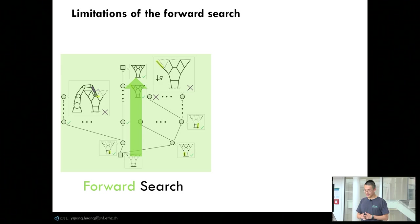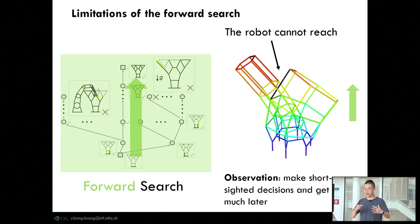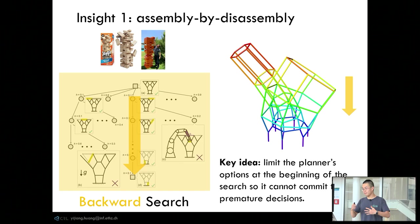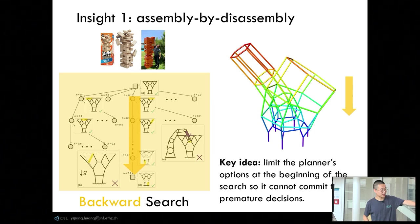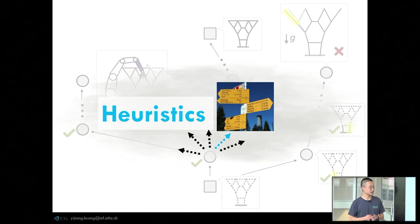A standard forward search can easily get stuck because of collision. The search starts from the ground, makes greedy decisions among too many seemingly innocent options, and only at the very end realizes it's stuck because one element can no longer be reached. One key algorithmic insight is that instead of going forward, we should search backwards — starting from the completed state and removing elements, like playing Jenga in reverse. By doing backward search, we limit the planner's options at the beginning, preventing it from trying to remove elements at the bottom that are proven infeasible by the collision checker, which is essential for avoiding collision-related dead ends.